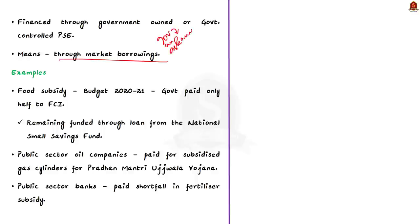For example, food subsidy is one of the major expenditures of the center. And if you see in the budget presentation for 2020-21, government paid only half the amount of budgeted food subsidy bill to the Food Corporation of India. So, what about the other half? That other half will be the shortfall. This shortfall was met through a loan from the National Small Savings Fund. So, this loan is the off-budget borrowing.